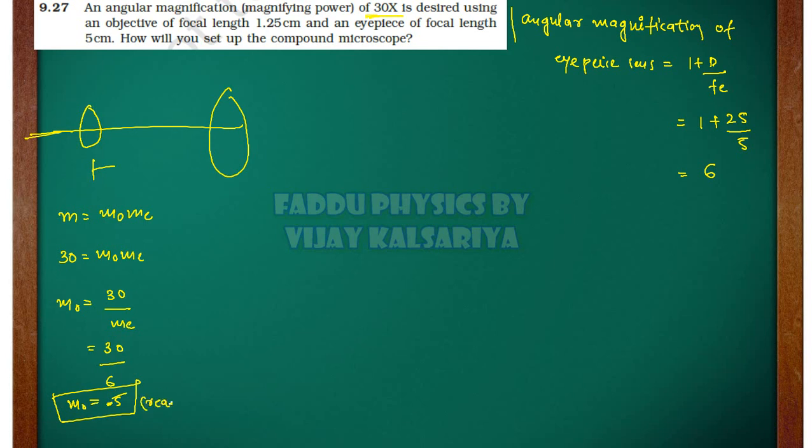Minus for real magnification. Now here, v by u is equal to minus 5. So u is equal to minus 5v.